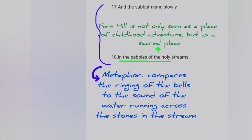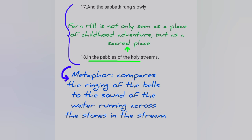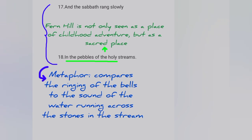Lines 17 and 18 together give a metaphor comparing the ringing of the bells to the sound of water running across the stones in the stream. 'And the Sabbath rang slowly' — that is the bell — 'the bell rang in the pebbles of the holy streams.' Line 18: 'In the pebbles of the holy stream' — the interpretation is that Fernhill is not only seen as a place of childhood adventure but as a sacred place.